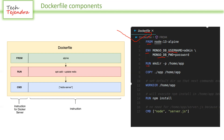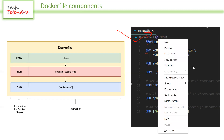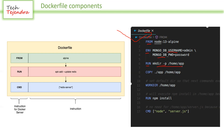The RUN instruction tells Docker to execute a local command inside the image — for example, creating a directory inside the image. The COPY command copies something from your local machine (where the Docker daemon is running and you are building your image) into the image. So here, COPY is copying the entire app folder from the local machine into the image.